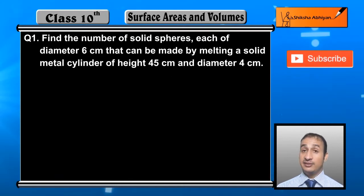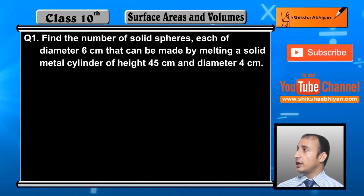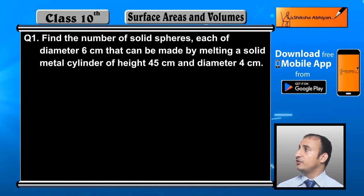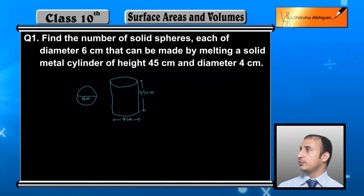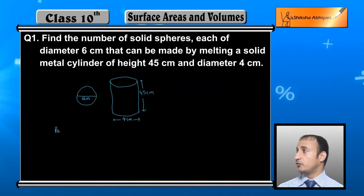Student, I have already drawn the figure here. I have made a sphere of 6 centimeter and our metallic cylinder which is solid has dimensions of 45 centimeter height and 4 centimeter diameter.